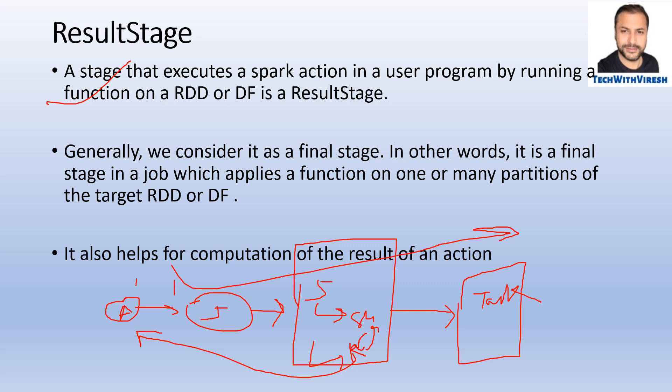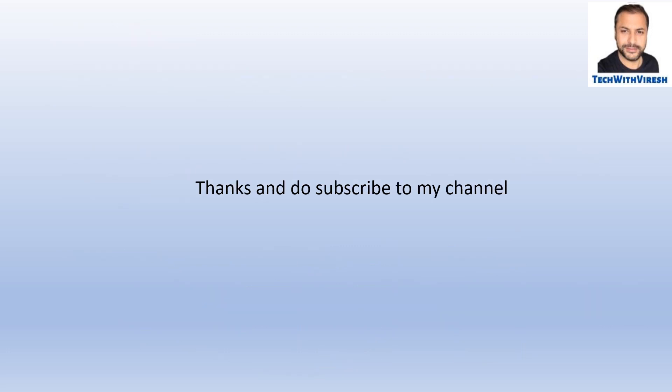To summarize: one action creates one job; a job creates multiple stages; each stage is a collection of tasks; and each task needs one dedicated core. Stages are of two kinds: shuffle map stage and result stage. The result stage initiates the shuffle map stage, which processes all dependent stages and returns output to the result stage, which computes the final result back to the action. That's the complete flow in the Spark stage ecosystem. Thanks for watching — do subscribe to my channel!